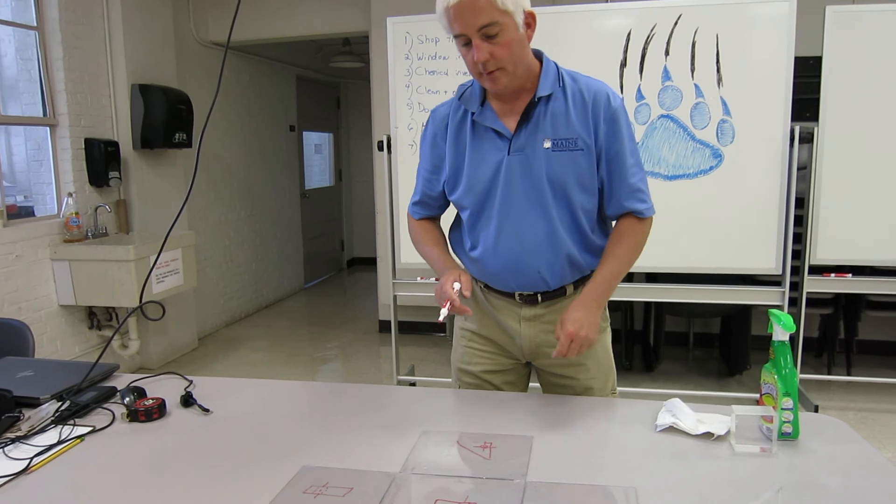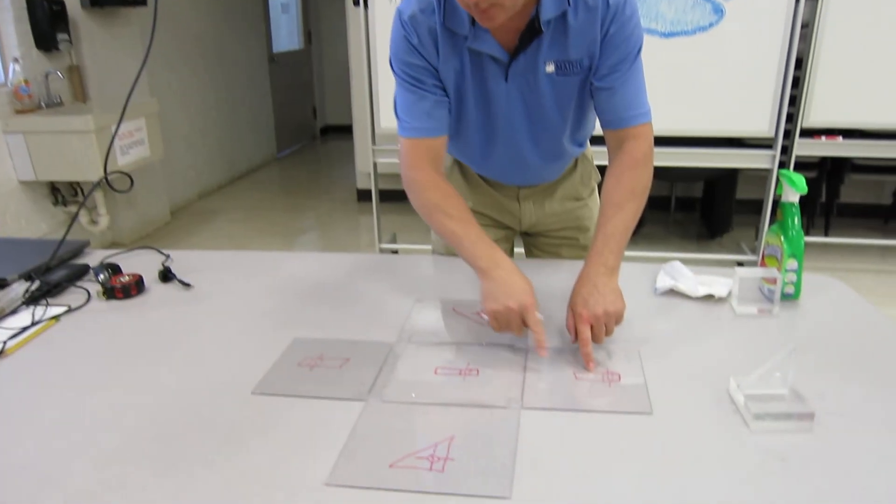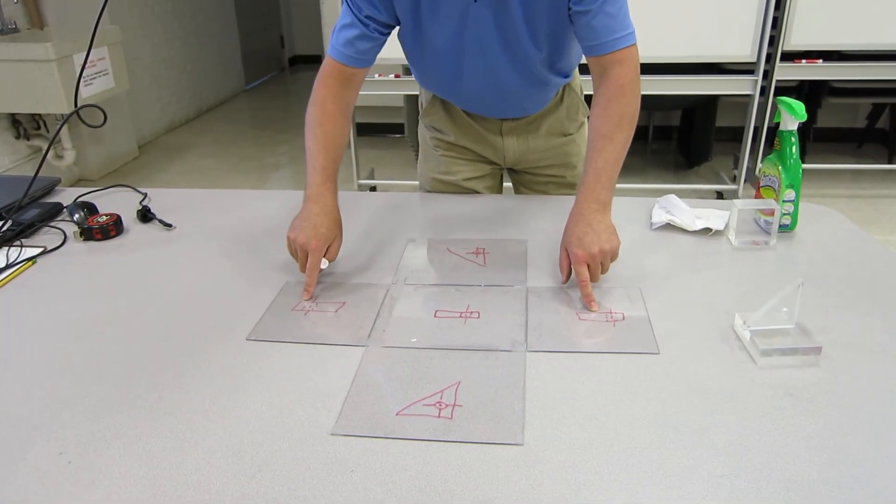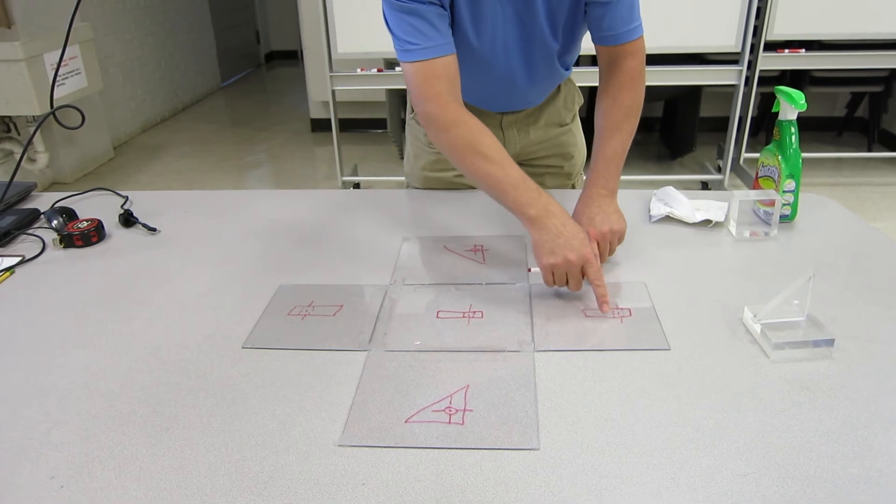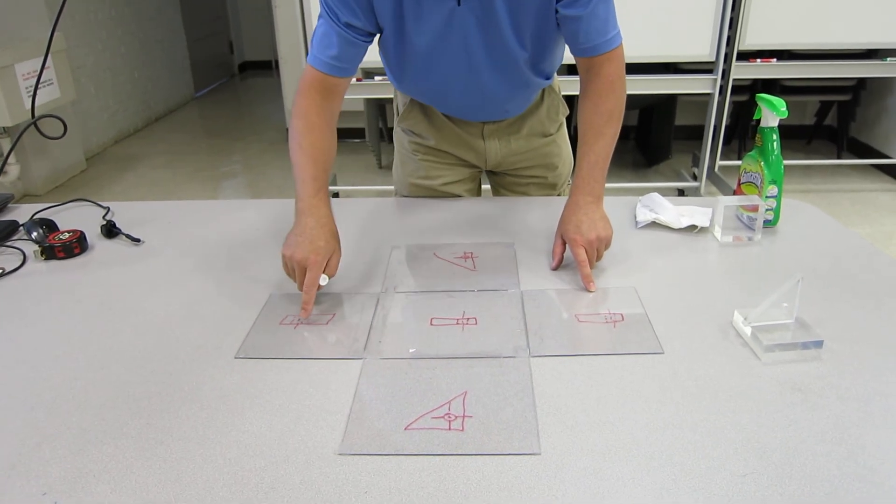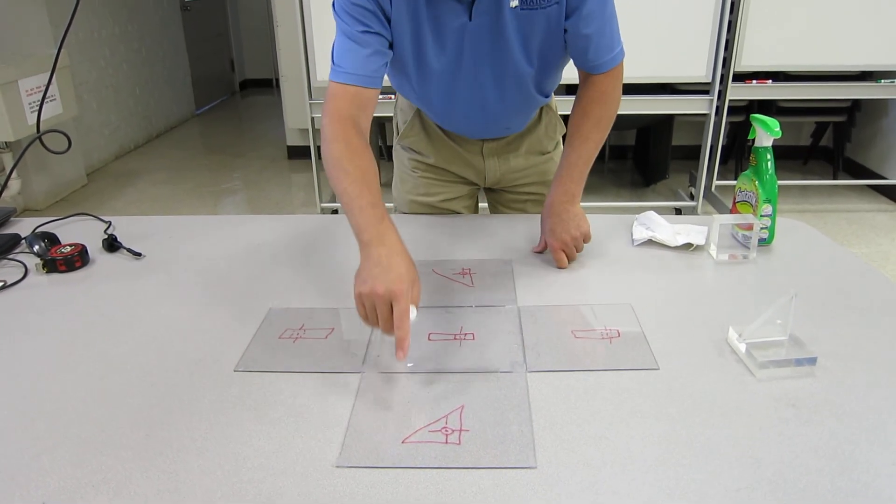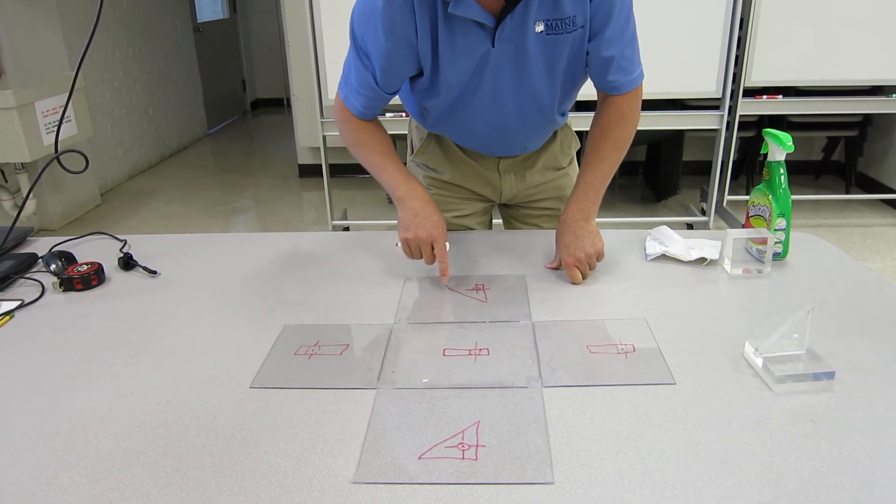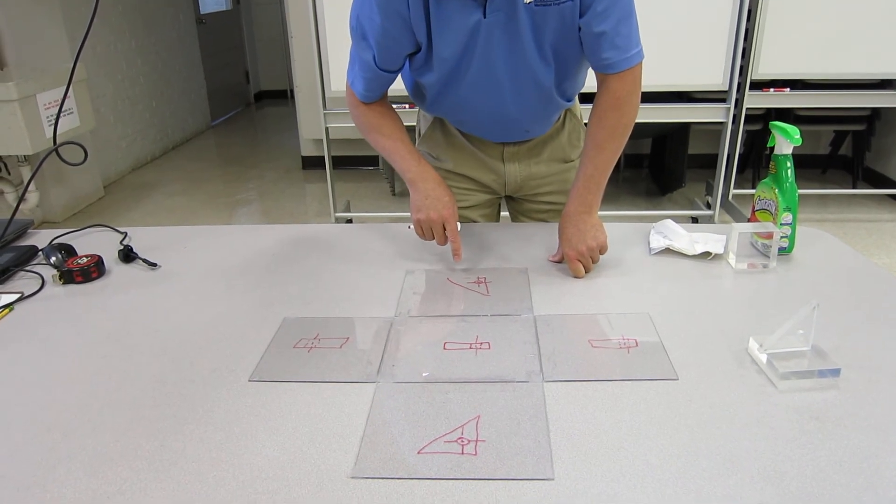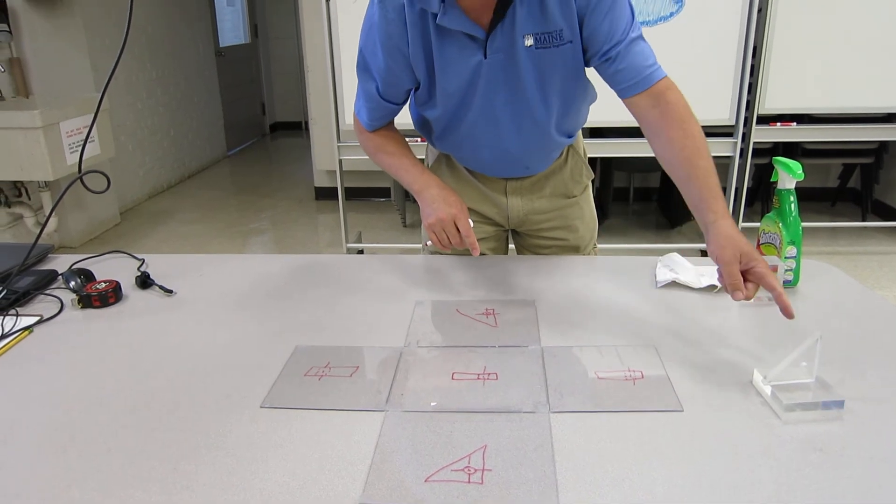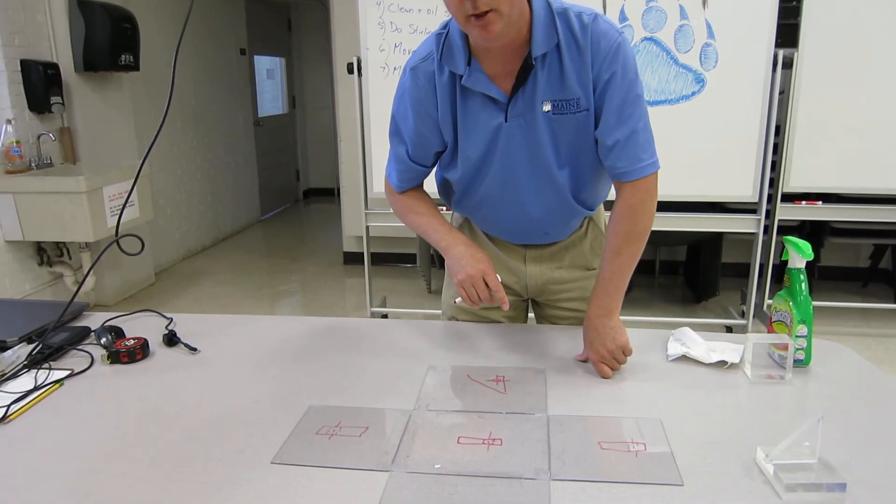Now notice, all of these edges to first order line up. As do these edges, they all line up. The edges here, here, and here, they all line up because it's projected off the object into the glass box.